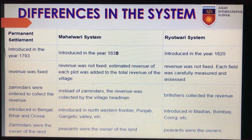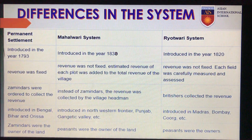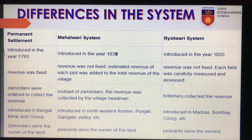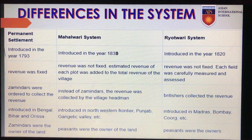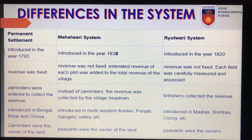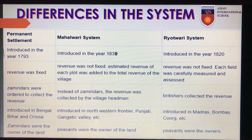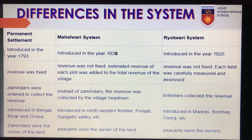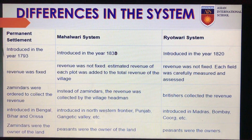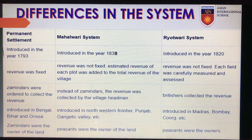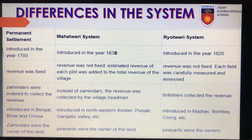Let us talk about the basic differences in these three systems. In the Permanent Settlement, the revenue was fixed, while in the Mahalwari or the Ryotwari system, the revenue was not fixed. In the Permanent Settlement, the zamindars were ordered to collect the revenue, while in the Mahalwari system the revenue was collected by the village headman. In the Ryotwari system, the Britishers directly collected the revenue.